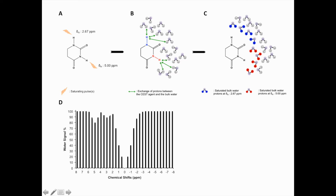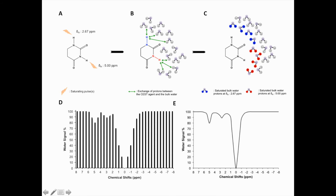Collecting water signals while applying a range of radio frequencies gives a graph like Figure D, in which the water signal is suppressed in the regions where the applied radio frequency matches the resonance frequency of the exchangeable protons in the contrast agent. Collecting the plot of all water signals gives a graph like Figure E, which is called the Z-spectrum.